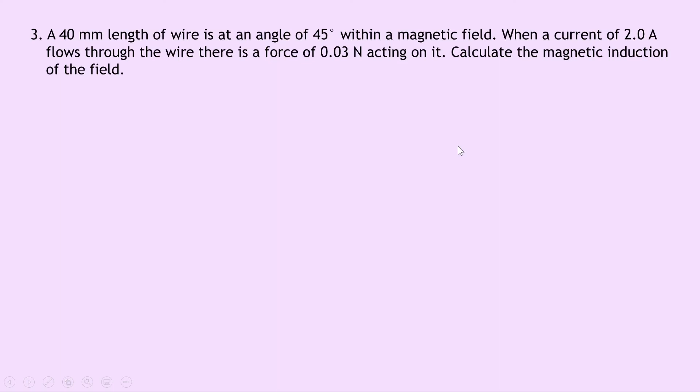Writing down what we know from the question we're trying to find B. We know that F is 0.03 newtons. We know that the current I is 2 amps and we know the length L of the wire is 40 millimeters which we need to rewrite in meters. So we get 40 times 10 to the minus 3 meters. And lastly theta is 45 degrees which it tells us in the question. So writing down our equation we have F equals ILB sin theta and substituting in the numbers we have 0.03 equals 2.0 times 40 times 10 to the minus 3 times B times sin 45. And so I would do the 2 times the 40 times 10 to the minus 3 times sin 45 in your calculator and then divide 0.03 by that answer and you'll end up with B equals 0.53 tesla.